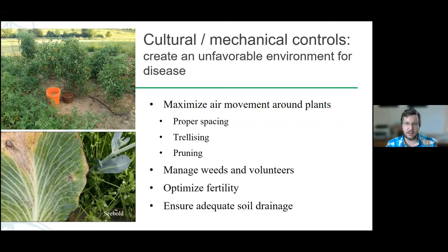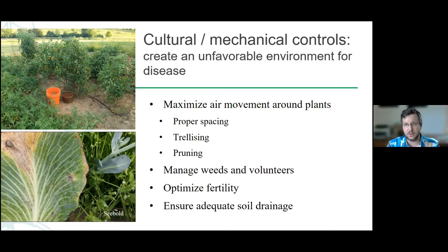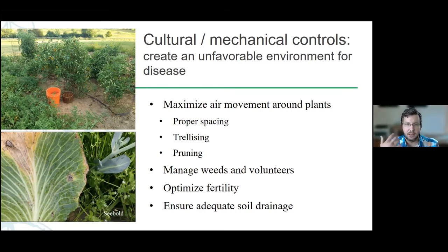This is where cultural and mechanical controls start to blur. The big thing is you're trying to create an unfavorable environment for the disease. Like we said about irrigation, they really like free moisture. So anything you can do to encourage the plant to dry out by maximizing air movement around the plants — if you know you've had a lot of tomato foliar diseases, spread them out, provide proper spacing or even a little extra spacing, trellis them up off the ground so more air can flow through, and prune them up to create a thinner canopy close to the ground.